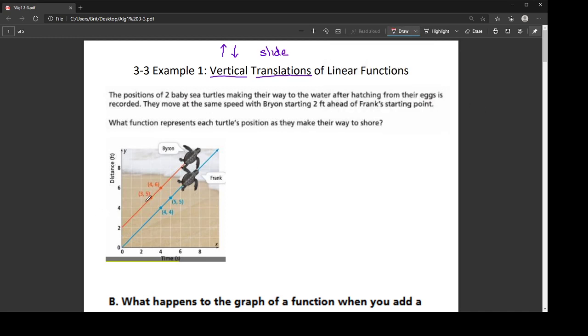So for Byron, if I use the slope-intercept form, his slope is 1, right? Because I'm rising by 1 and running by 1. So where M is, I'm going to put an imaginary 1. And then his y-intercept is right here at 2. So the equation for Byron is x plus 2.